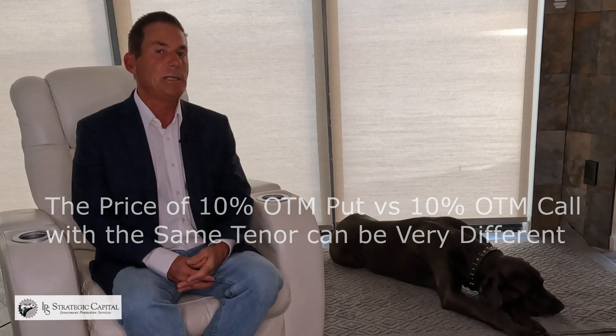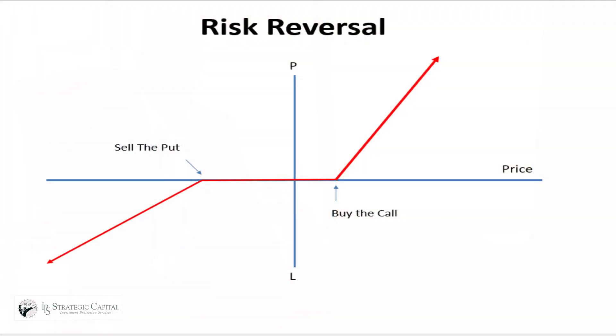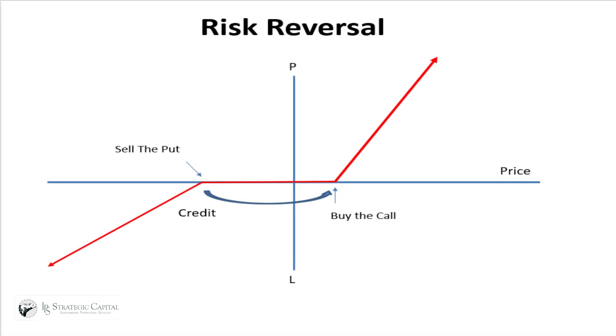What that allows me to do is actually sell very short dated puts and then use that money to buy calls. I could buy calls actually closer to the money for less than I could buy further out of the money puts. This is one of my favorite trades in a very steep reverse skew environment.